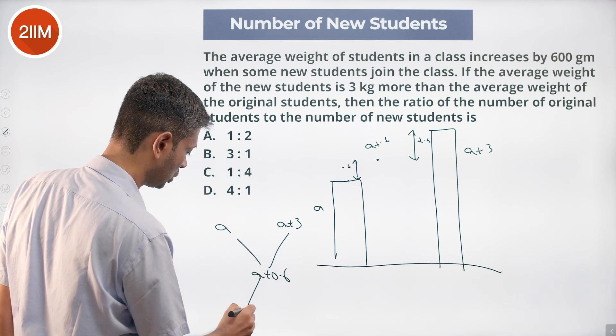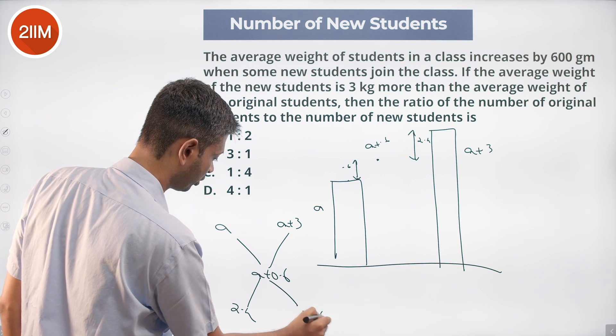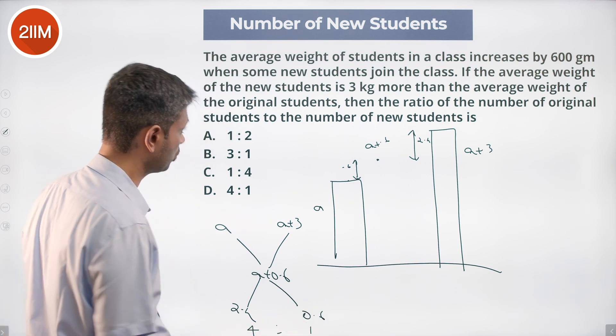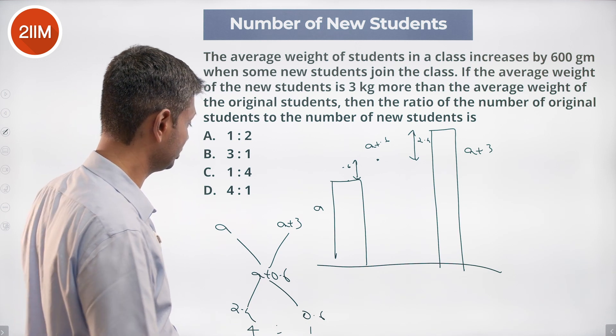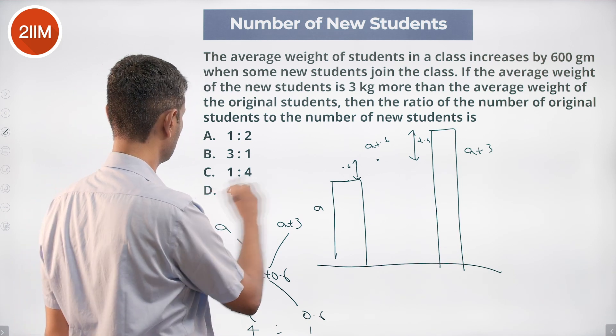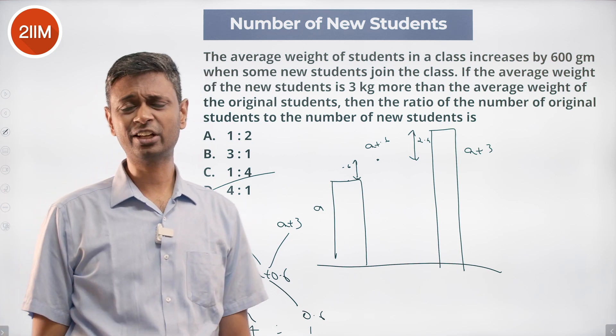be mixing in the ratio 2.4 to 0.6, or mixing in the ratio 4 to 1. The ratio of number of original students to the number of new students, original to new, is 4 to 1. A classic question...